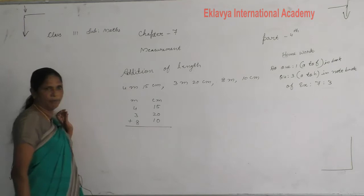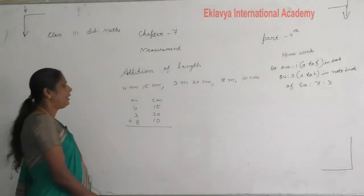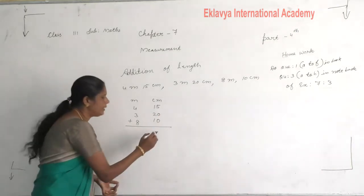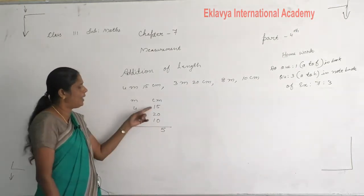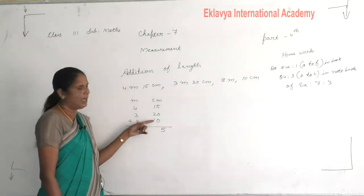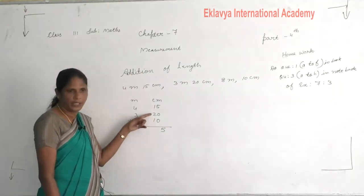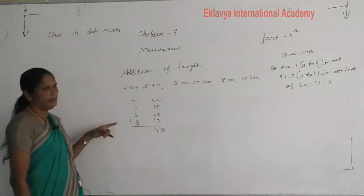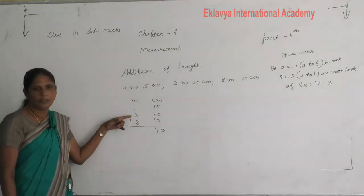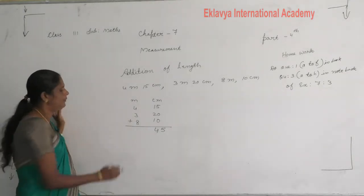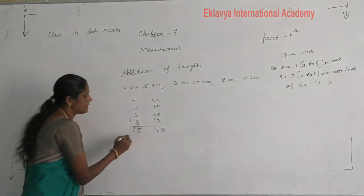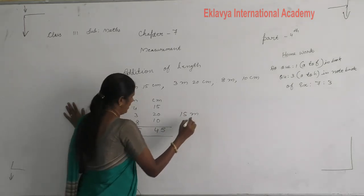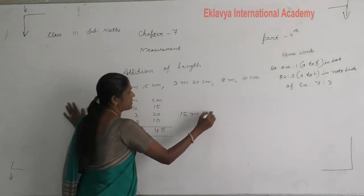Now: 5 plus 0 plus 0 gives 5. Then 1 plus 1 is 2, 1 plus 2 is 3, 3 plus 1 is 4. Then 4 plus 3 is 7, 7 plus 8 is 15. Our answer: 15 meter 45 centimeter.